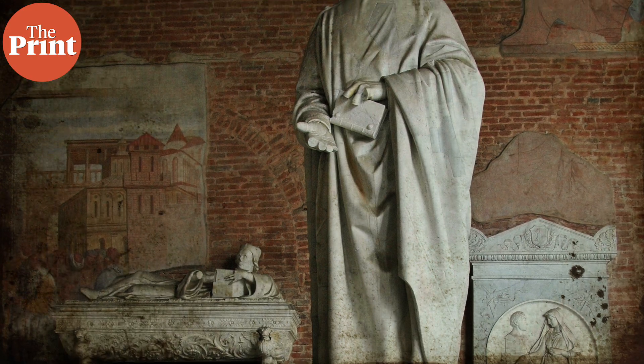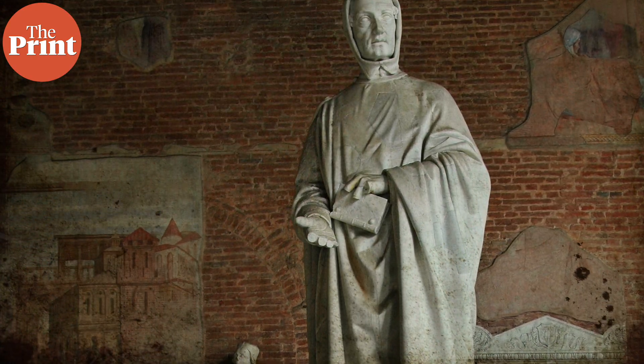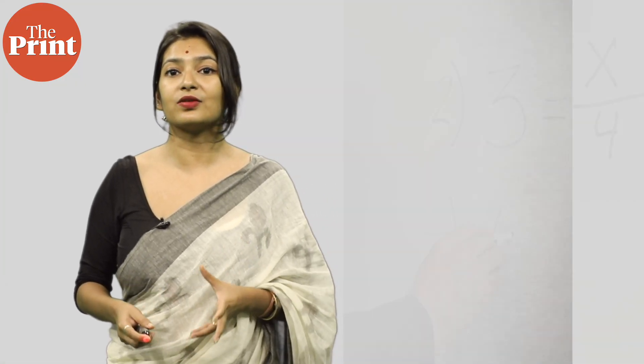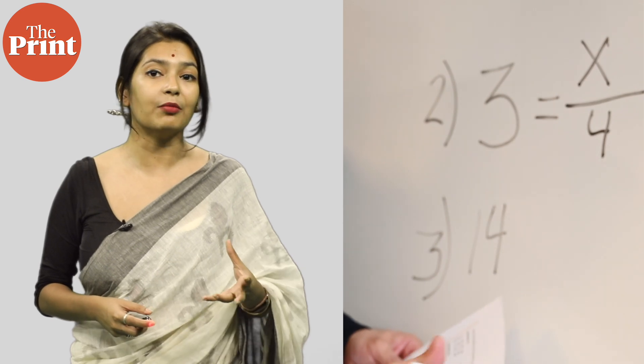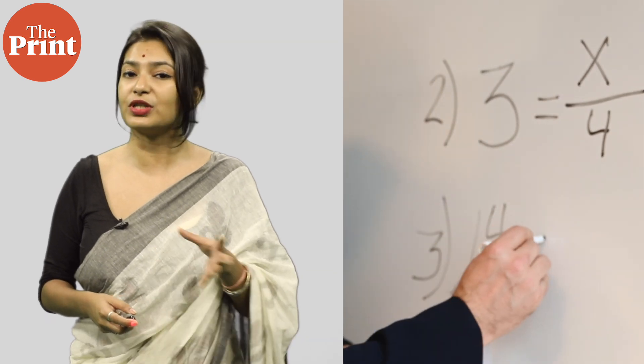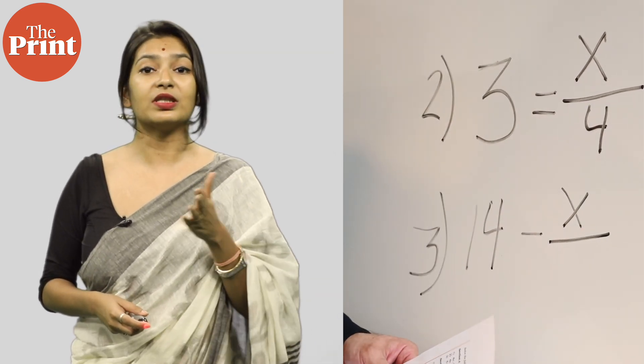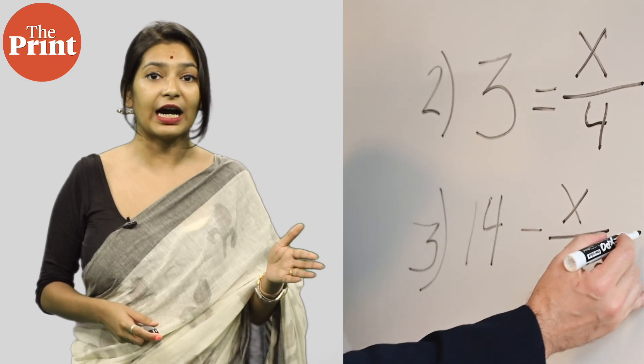Named after the Italian mathematician Leonardo Fibonacci, the Fibonacci sequence is simply a series of numbers in which each number is the sum of the two preceding ones. So for example, the sequence 1, 2, 3, 5, 8, 13, 21, 34, and so on, would be a Fibonacci sequence.